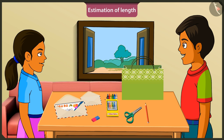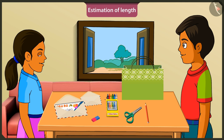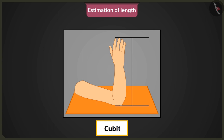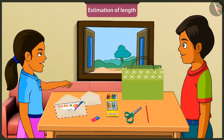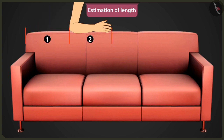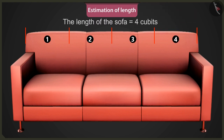Mintu, now I will teach you how to measure by making your arm length a unit. The distance from the elbow to the tip of the middle finger is called the length of the arm, or the length of a cubit. Can we use it to measure this sofa? Yes. This is one arm's length, two arms, three arms, four arm's length. So the length of this sofa is equal to four cubits.